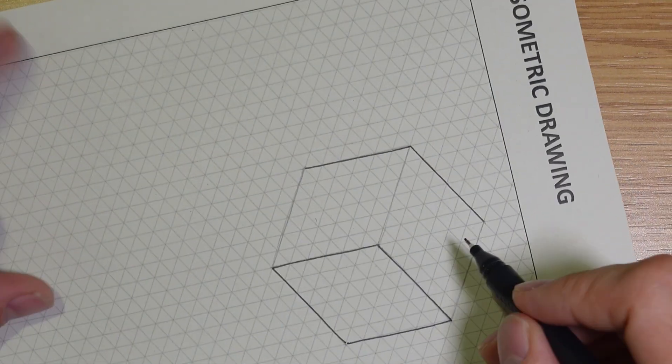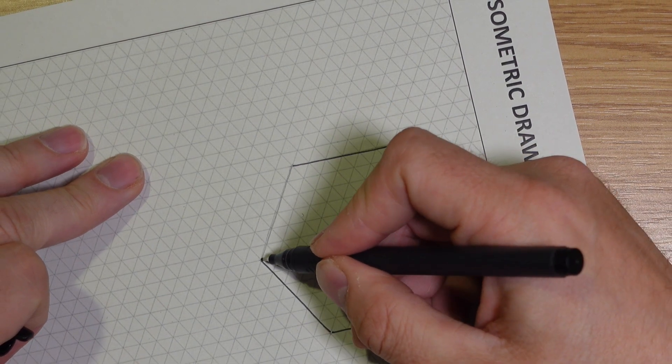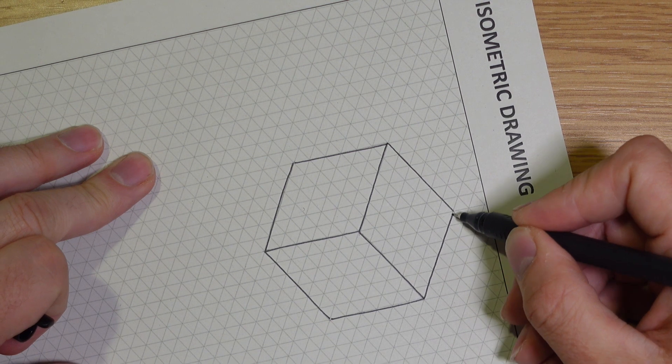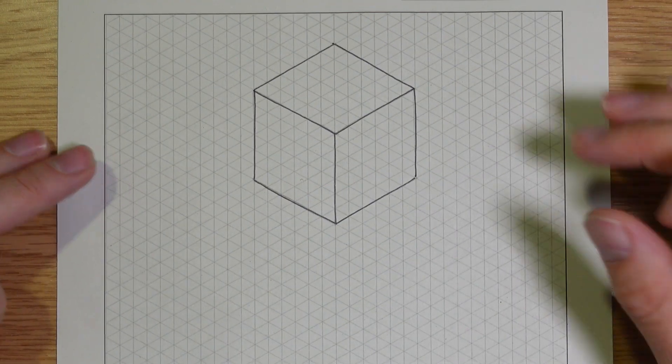To draw a straight line freehand you need to rotate the paper and get into a comfortable position, then practice the motion of drawing the line without touching the paper. This is a method known as ghosting.